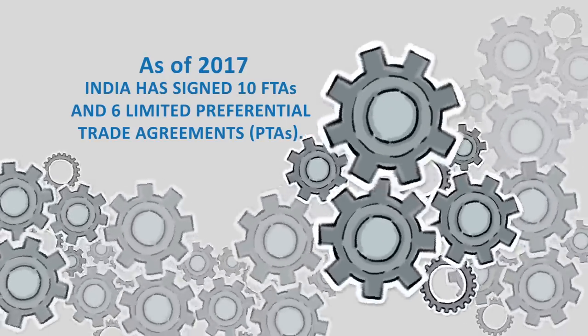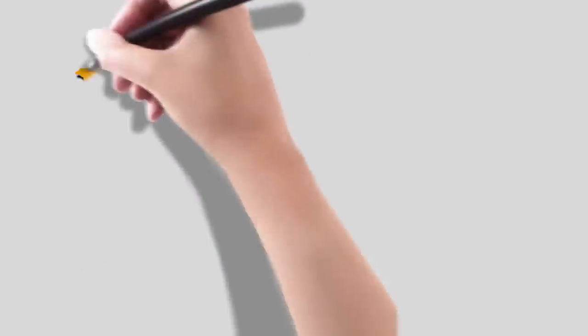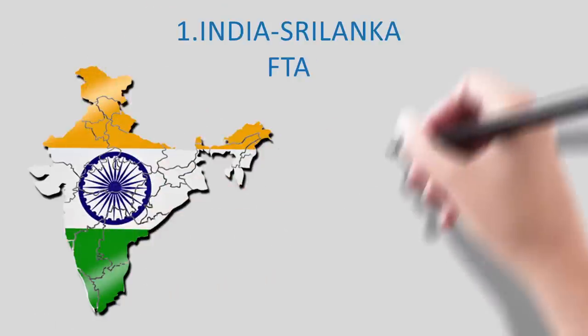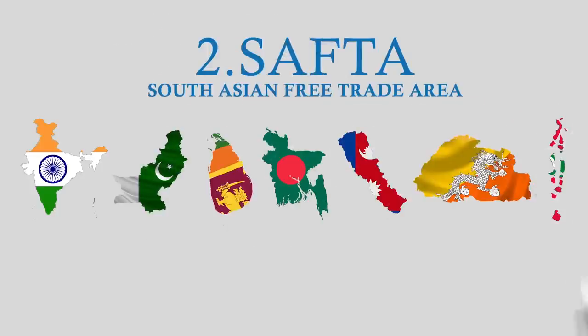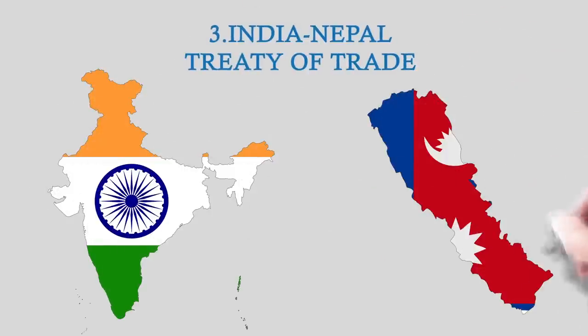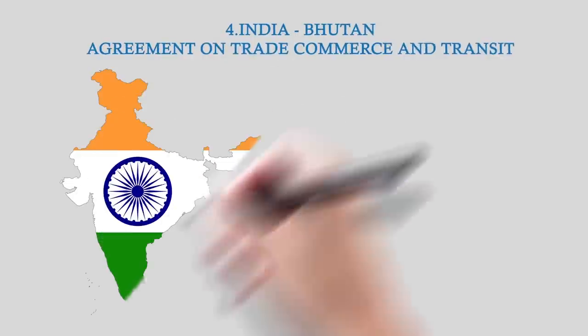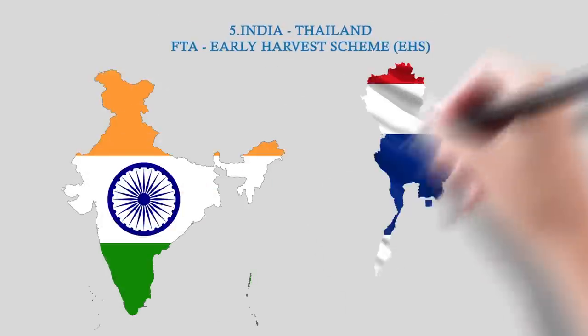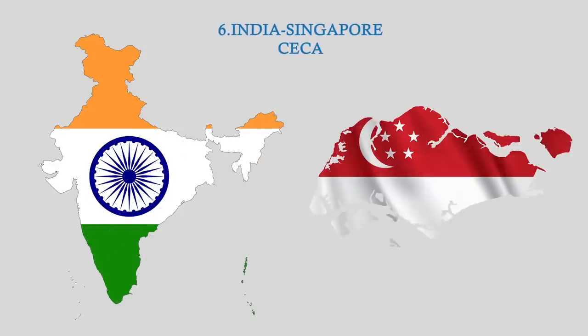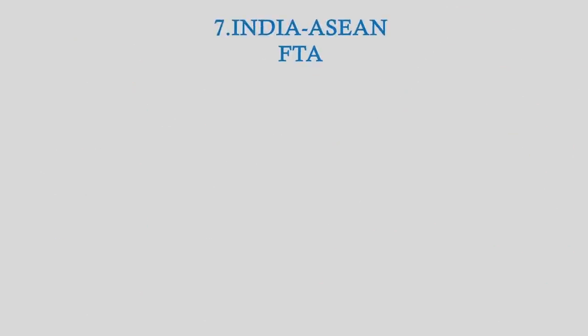The FTAs signed by India include: India-Sri Lanka FTA; SAFTA (Agreement on South Asian Free Trade Area), whose 7 member countries are India, Pakistan, Sri Lanka, Bangladesh, Nepal, Bhutan and Maldives; India-Nepal Treaty of Trade; India-Bhutan Agreement on Trade, Commerce and Transit; India-Thailand FTA (Early Harvest Scheme, EHS); and India-Singapore CECA.